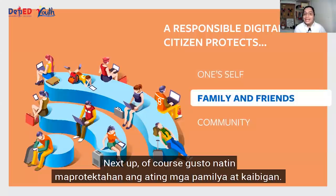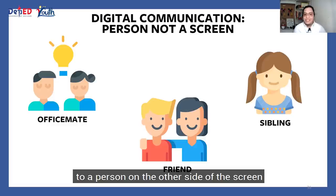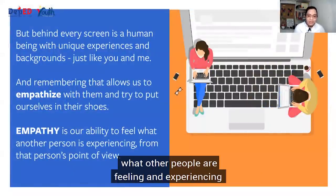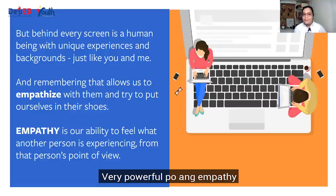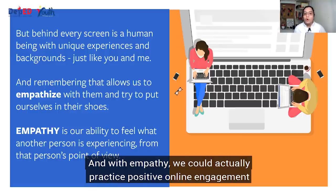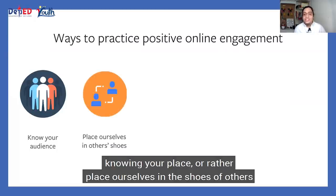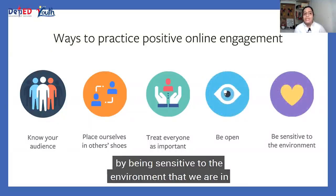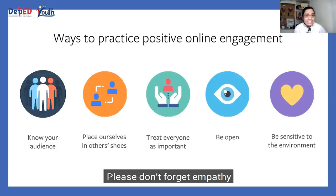Next up, gusto po nating maprotektahan ang ating mga pamilya at ka-ibigan. And to do this, one thing that you have to remember is that you are talking to a person on the other side of the screen. And remembering this, the key word is of course empathy. Kasi empathy is our ability to really feel what other people are feeling and experiencing from the point of view of other people. So nilalagay natin ang ating sarili sa sapatos o sa lugar ng ibang tao. Very powerful po ang empathy. And with empathy, we could actually practice positive online engagement.